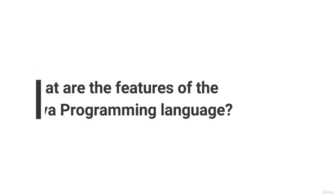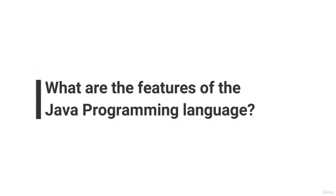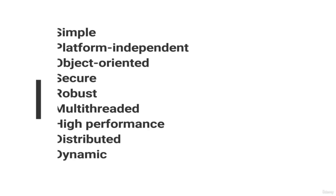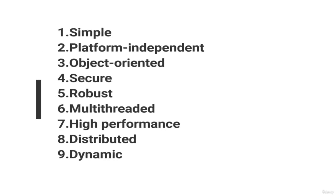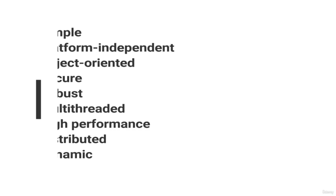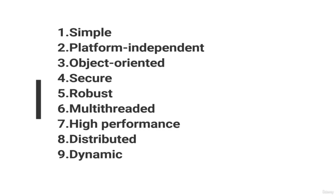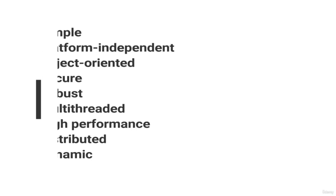What are the features of Java programming language? Java is simple, platform independent, object oriented, secure, robust, multi-threaded, high performance, distributed, and dynamic.